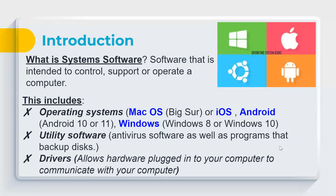For Apple laptops or desktops, you'd have macOS — Big Sur is their latest version. For iPhones, you'd have iOS. For Android devices, you might have Android 10 or 11, or on older devices, versions with sweet-treat names like Nougat, Oreo, Lollipop, or KitKat. More current devices are likely running Android 10 or 11.